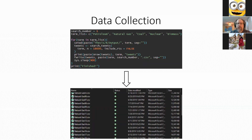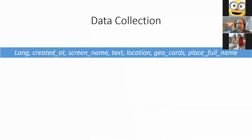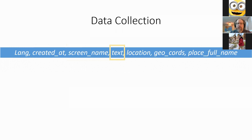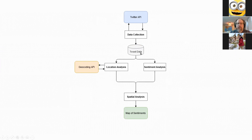This data has 88 different fields, though I only used seven. The language field restricted tweets to English. The created-at field was used to analyze when tweets were posted. The screen name was used for data quality checks to avoid bots or repeat posters. The text field — the actual tweet content — was used for sentiment analysis to classify tweets as positive, negative, or neutral toward natural gas. The final three fields were used in the location analysis.